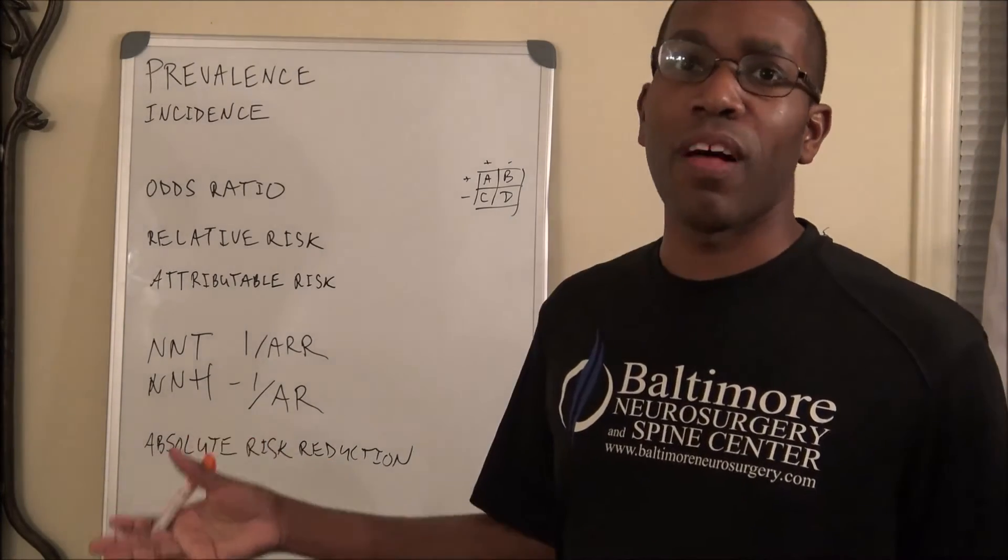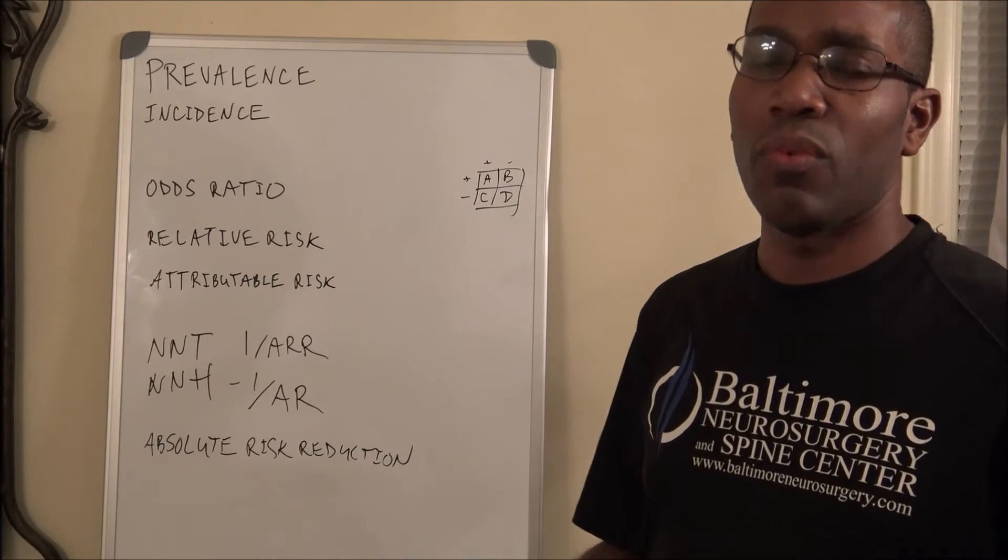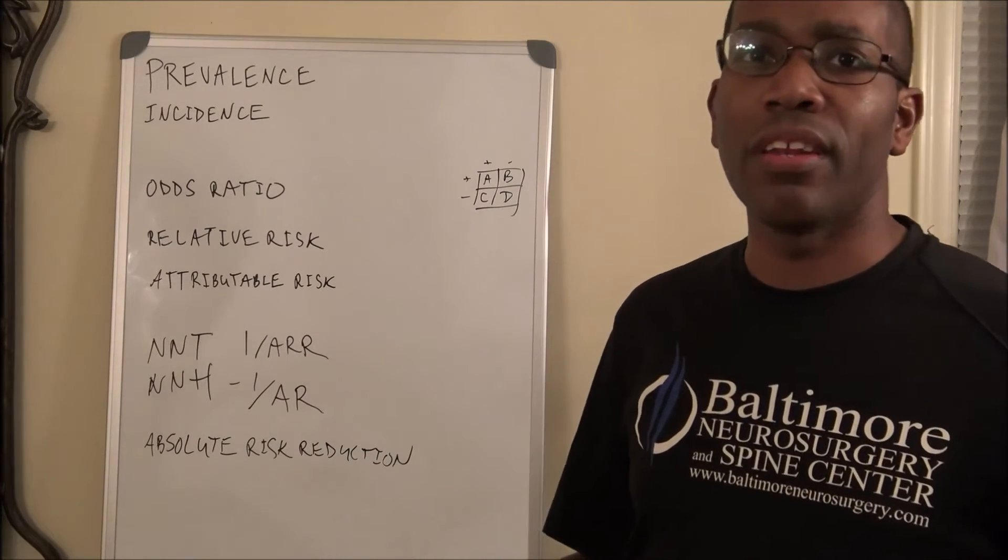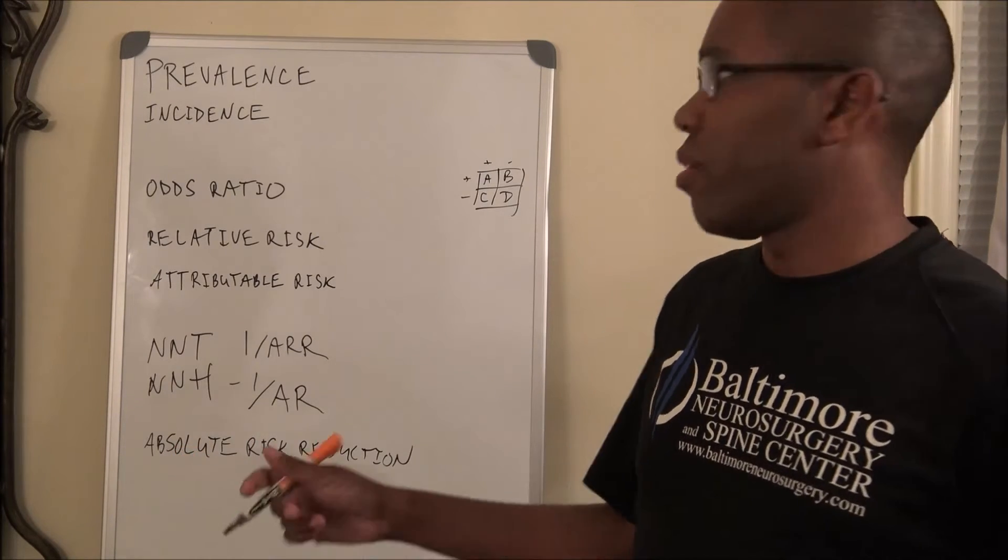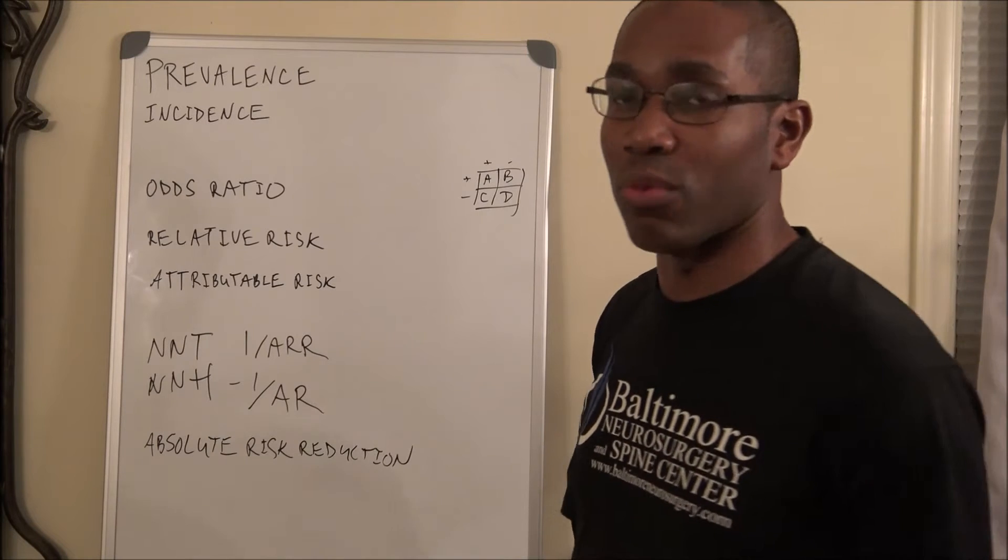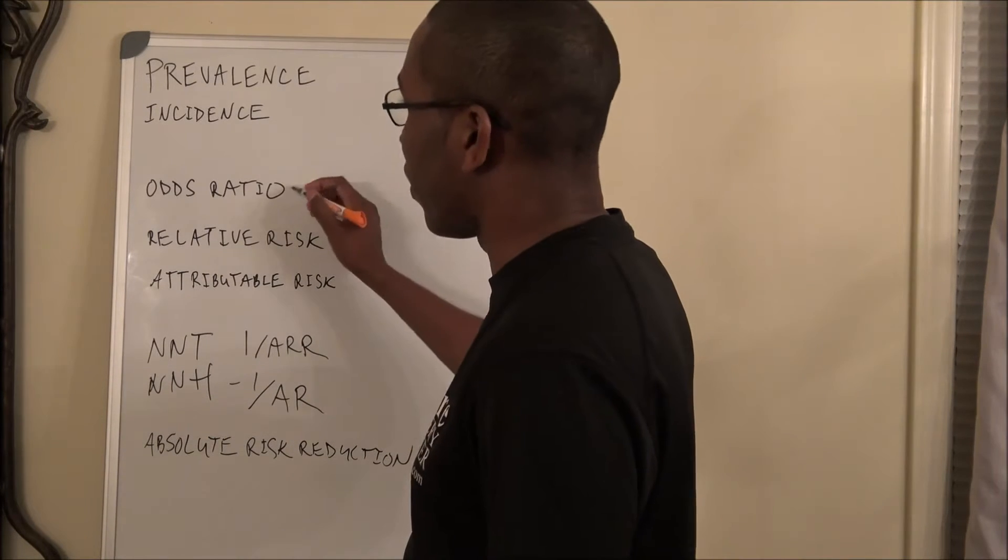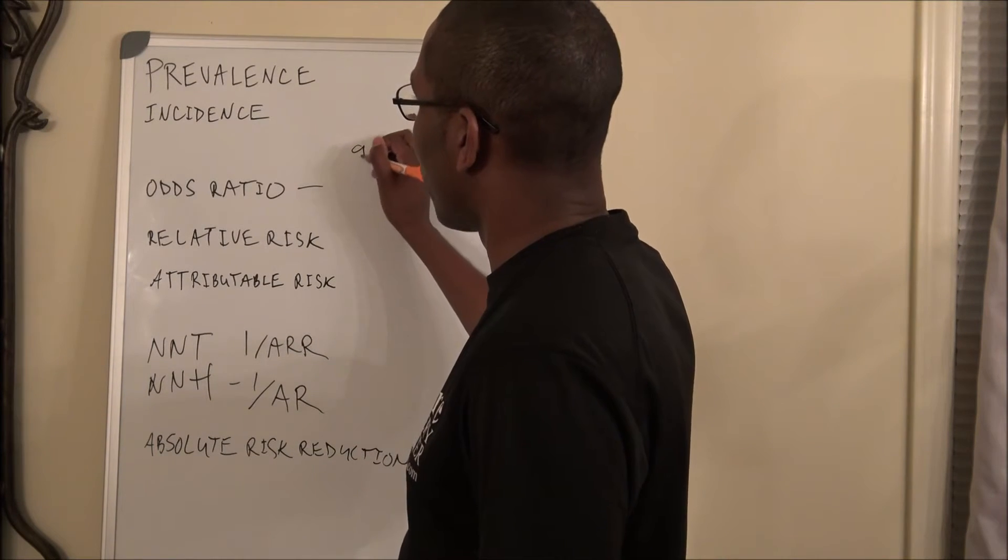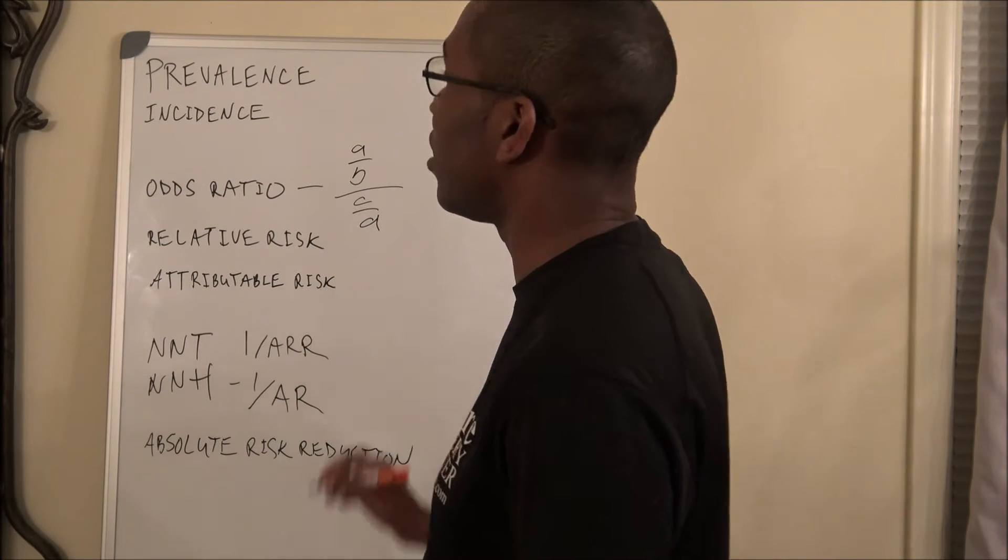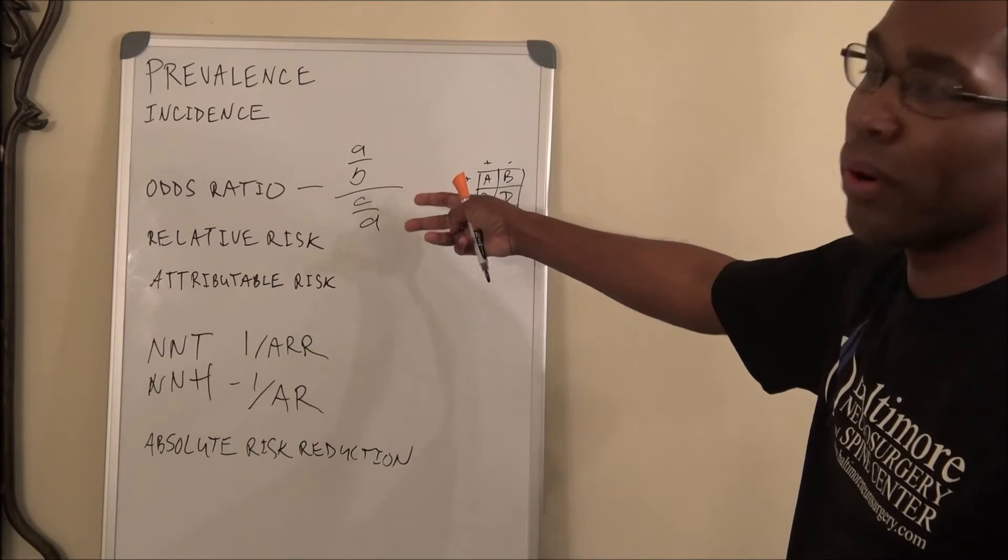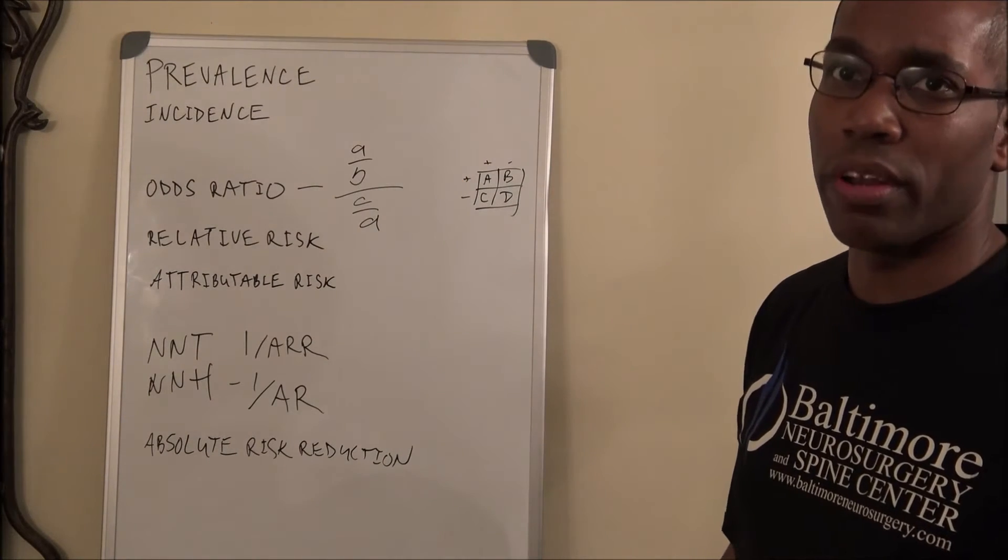And in order to calculate odds ratio, I like to think about Las Vegas. You've only got two numbers: 1 to 1, 2 to 1, that's what you think about when you're gambling. So what you're going to have for odds ratio is A over B, and that's going to be divided by C over D. You've got one number and one number divided by one number and one number.